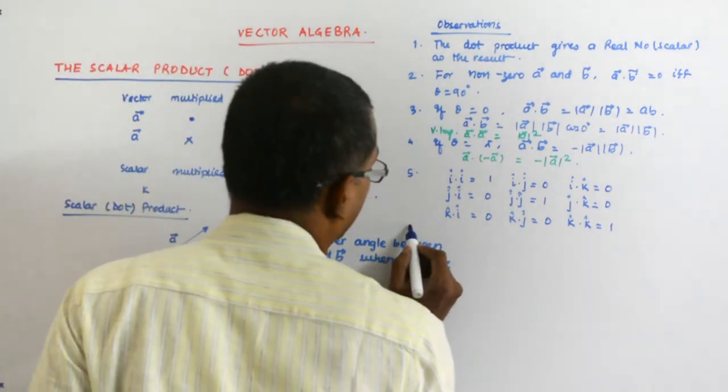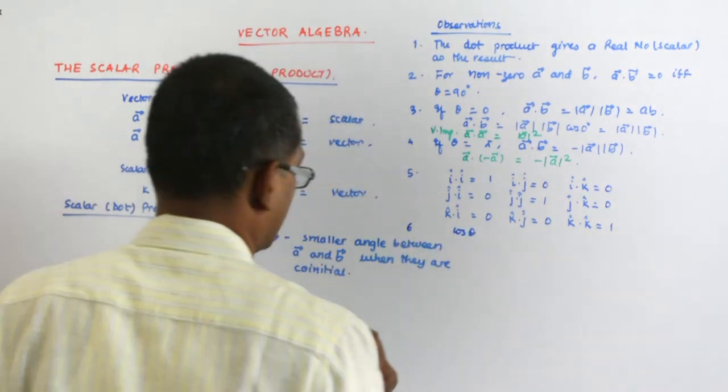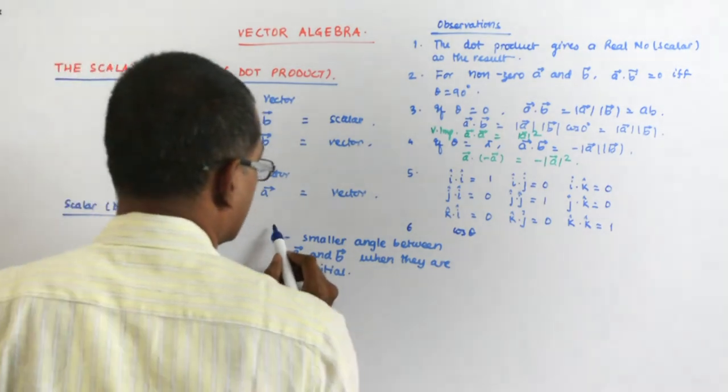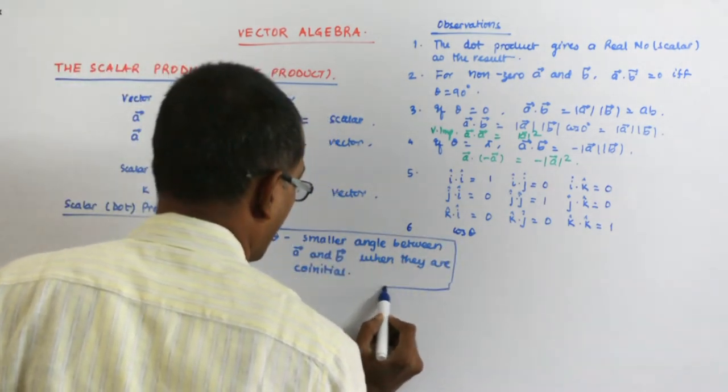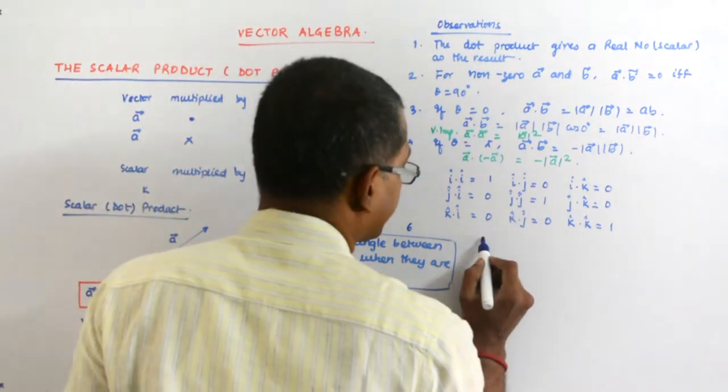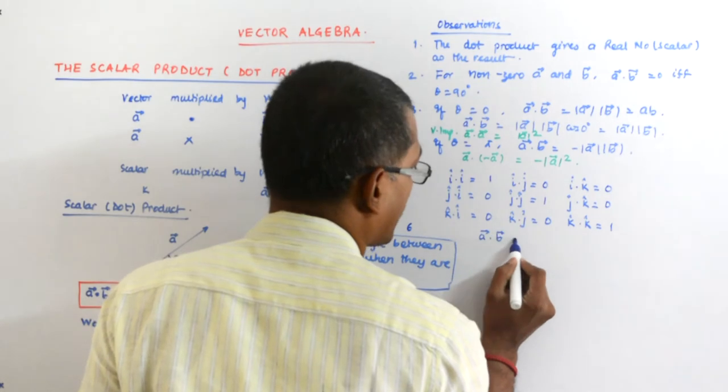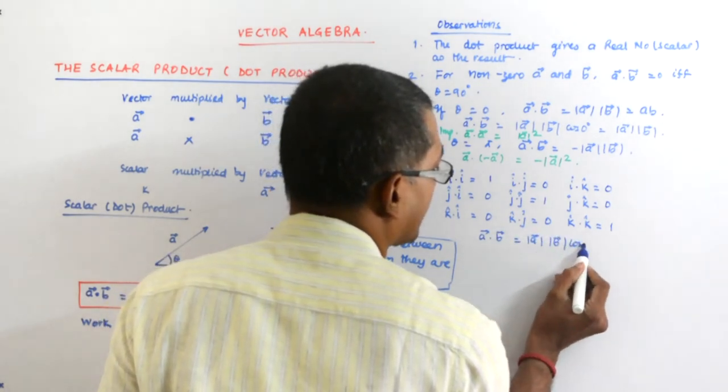If you are given two vectors, say A and B, then they are cos theta. See, A dot B is mod A mod B cos theta.